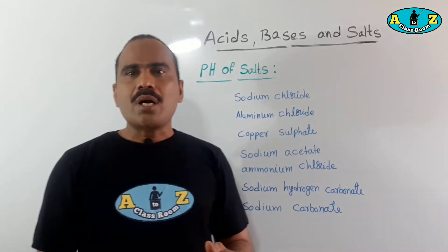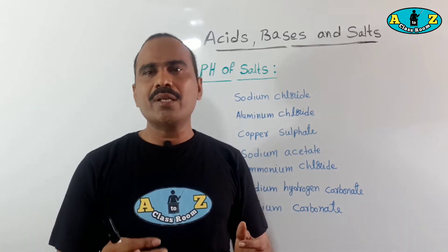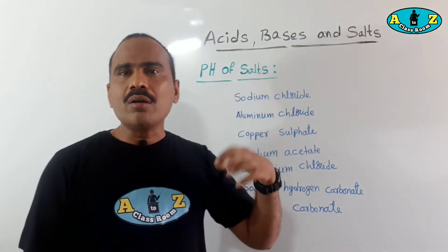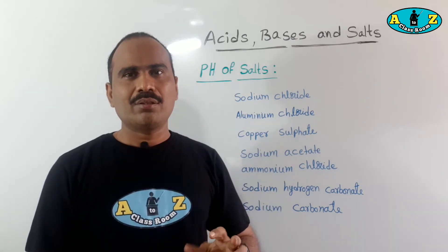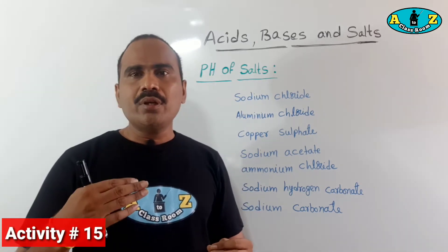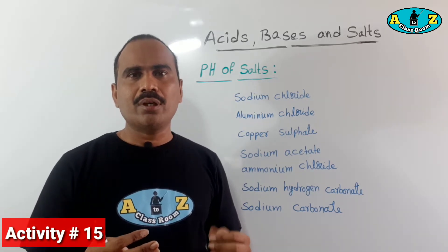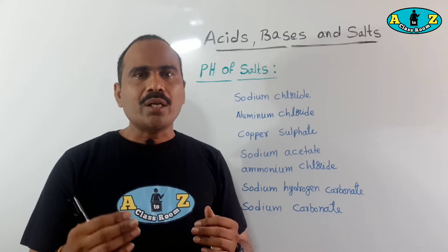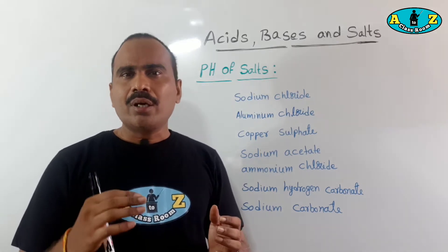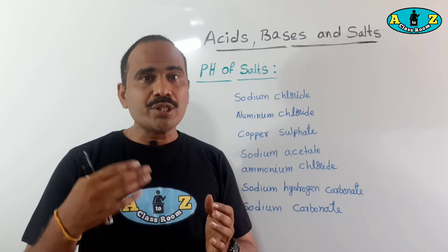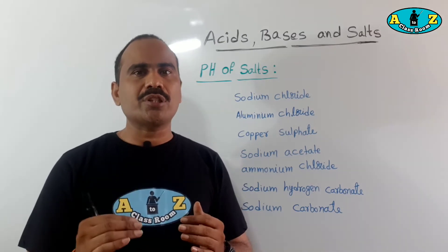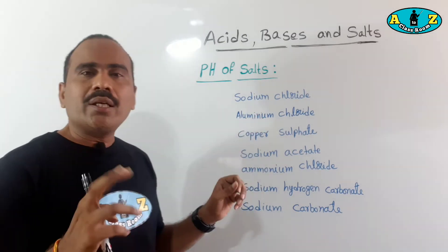We know salts are formed in neutralization reactions, which means salts are neutral. But what about the pH of salts? Are all salts pH 7 or not? We can understand this with a small activity. Salts are formed in neutralization reactions when an acid and base react. Neutralization forms salt with a neutral pH value. So we are taking different types of salts.